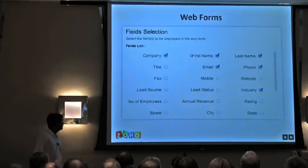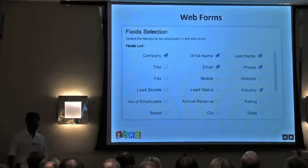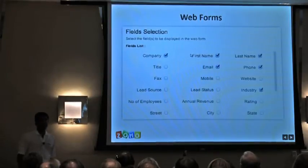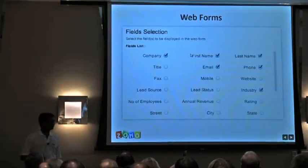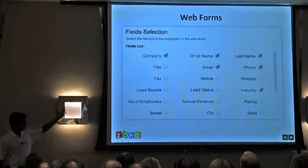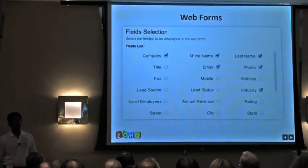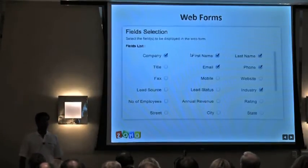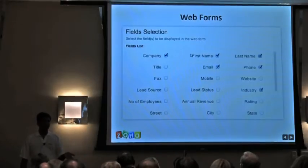The next step is to select the fields. The fields come from that particular module — so if you've created custom fields in your leads or contacts module, they will show up here. You can select fields by clicking the checkboxes adjacent to them, and those fields will appear in your web form output.